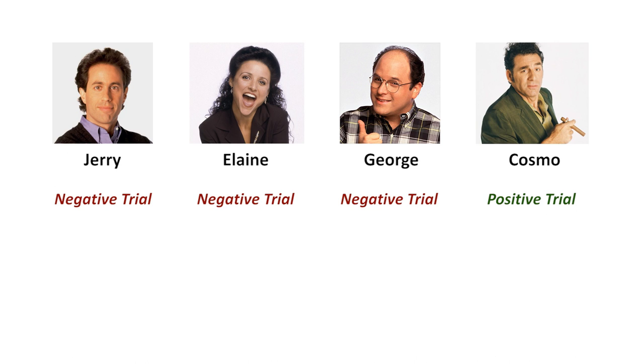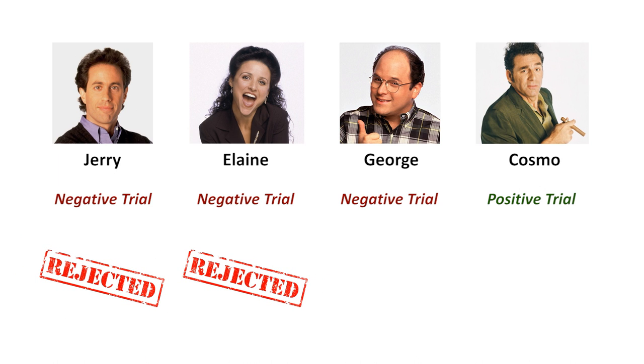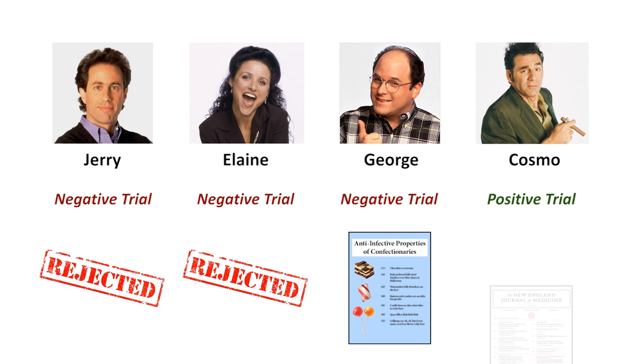But since it's hard to publish negative trials, Jerry and Elaine's papers are never accepted to a journal. George is successful at getting his paper published, but it only makes it into the Journal of the Anti-Infective Properties of Confectionaries. Meanwhile, Cosmo's trial gets published in the New England Journal of Medicine.